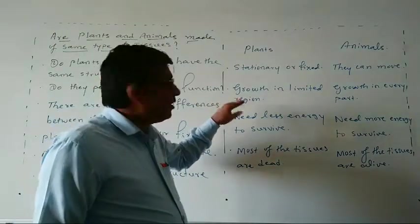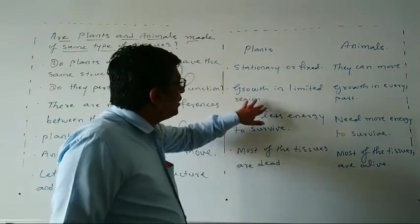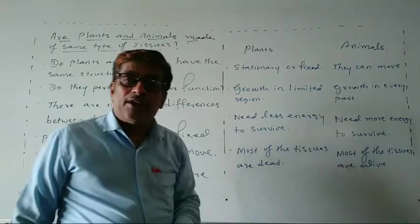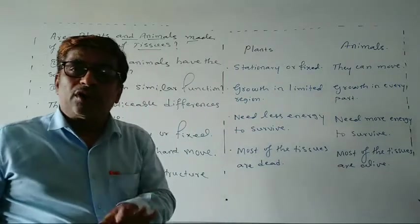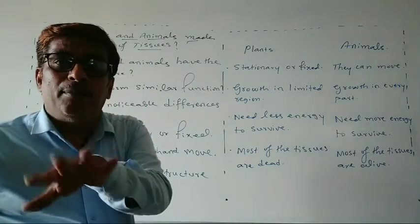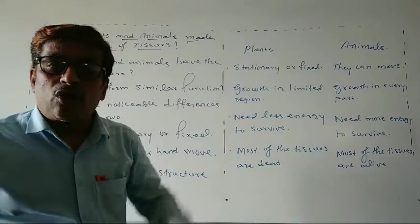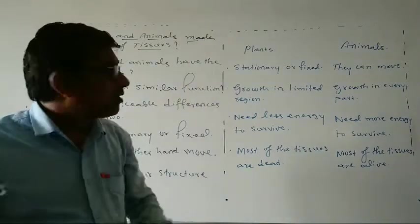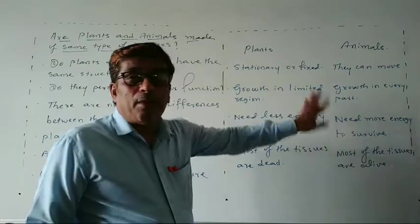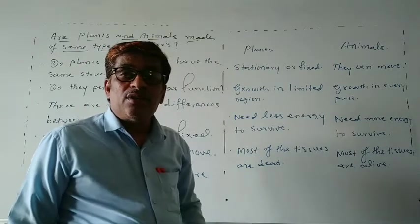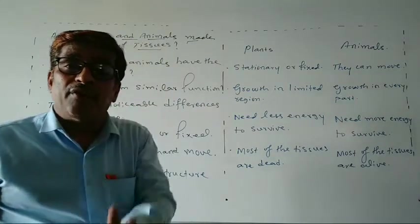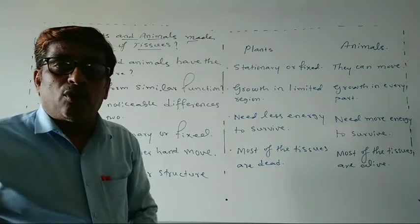The second aspect: growth in limited regions. In plants, growth takes place only in limited parts or limited areas, not all parts. But in animals, growth takes place in each and every part of the body.